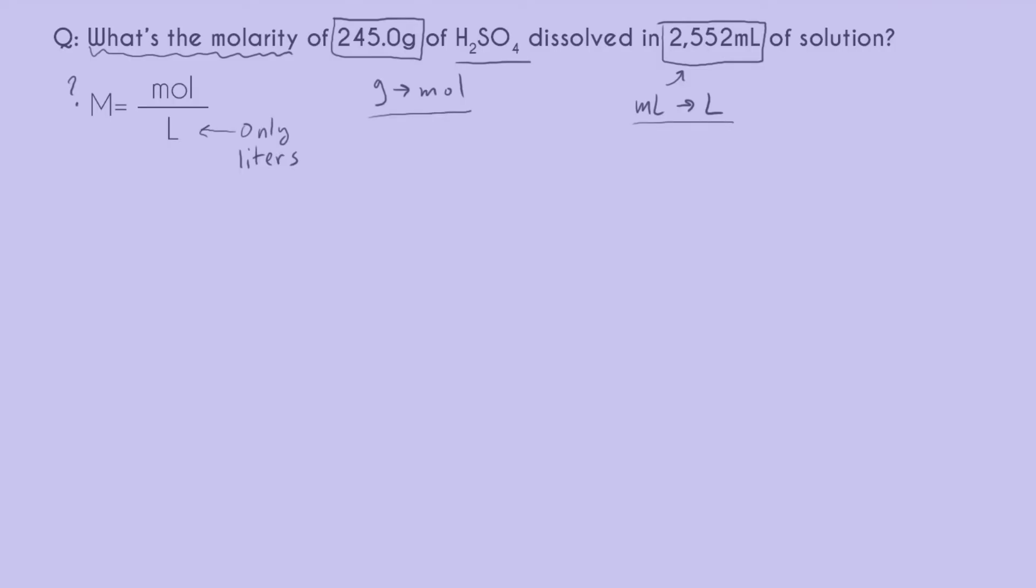In this case, we don't have our check marks yet for moles and liters, but we have pathways to get to those check marks. I'll have to convert grams to moles and then milliliters to liters, and then I can plug in like I did in problems one and two. It doesn't matter which conversion you do first. I'm just going to pick the more straightforward one. I'm going to convert milliliters to liters first. To convert to liters, we have to know that 1000 milliliters equals one liter.